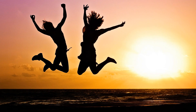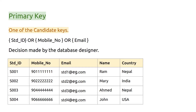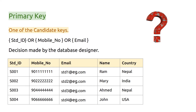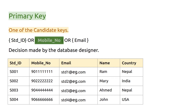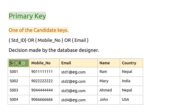Now that you understand super key and candidate key, let's get back to the primary key. How do we finalize the primary key? One of the candidate keys is chosen to be the primary key. Which one to choose mostly depends on the database designer. In this case, you can go for student ID, mobile number, or email. I will choose student ID because it most probably won't change — mobile numbers and email addresses sometimes change, but student ID is not likely to change.